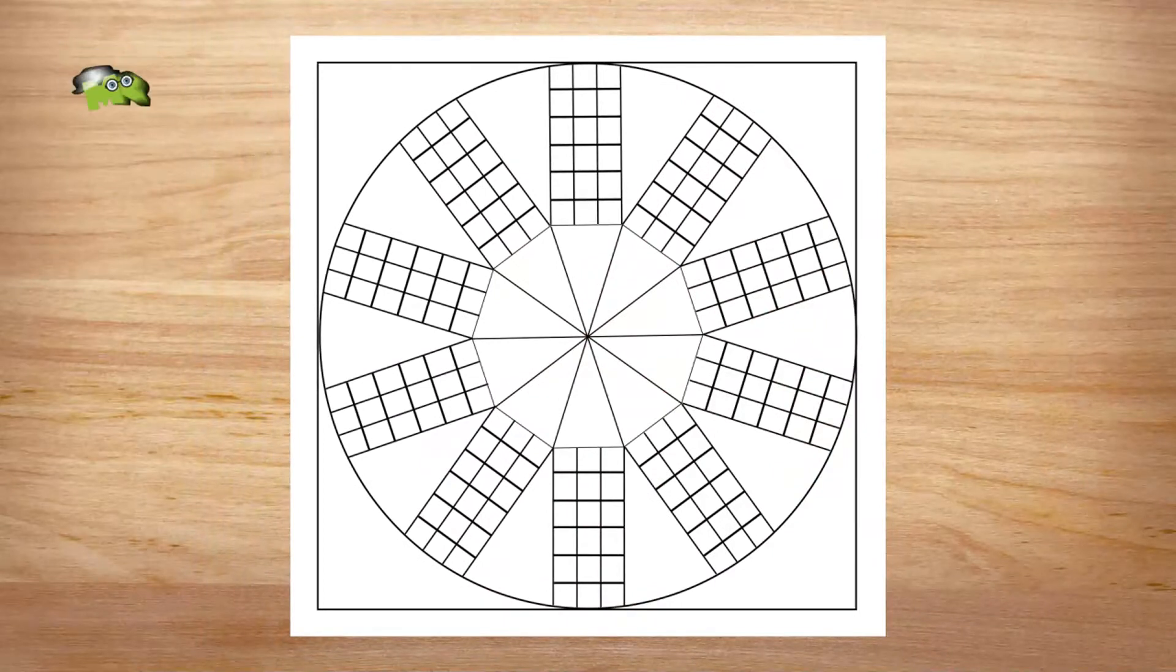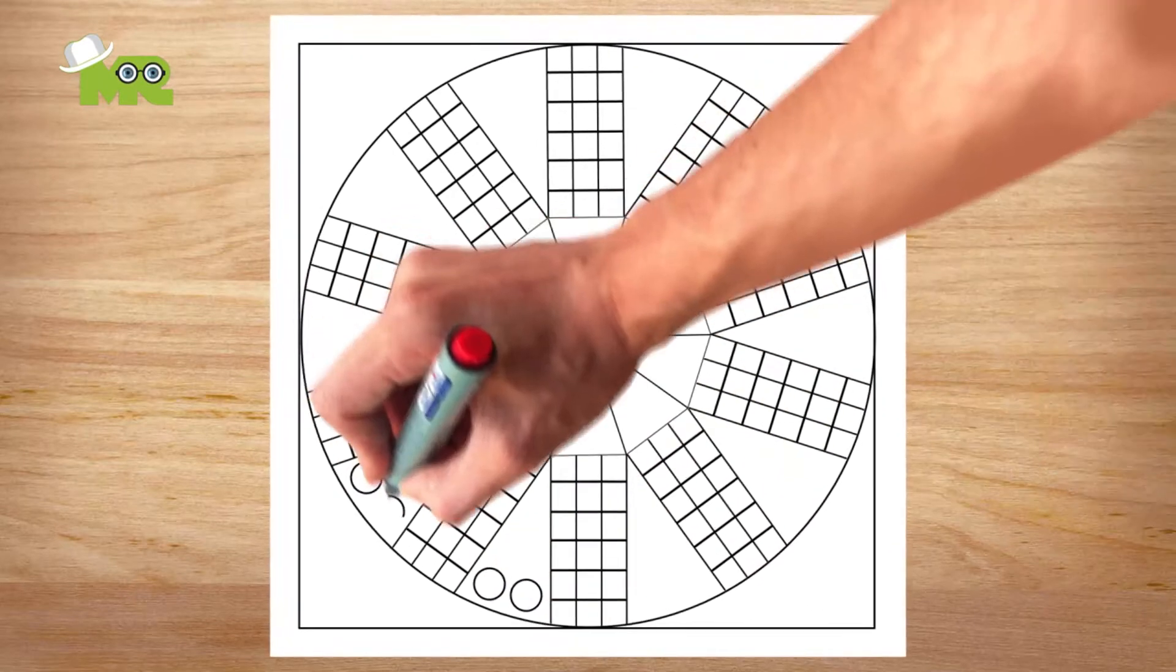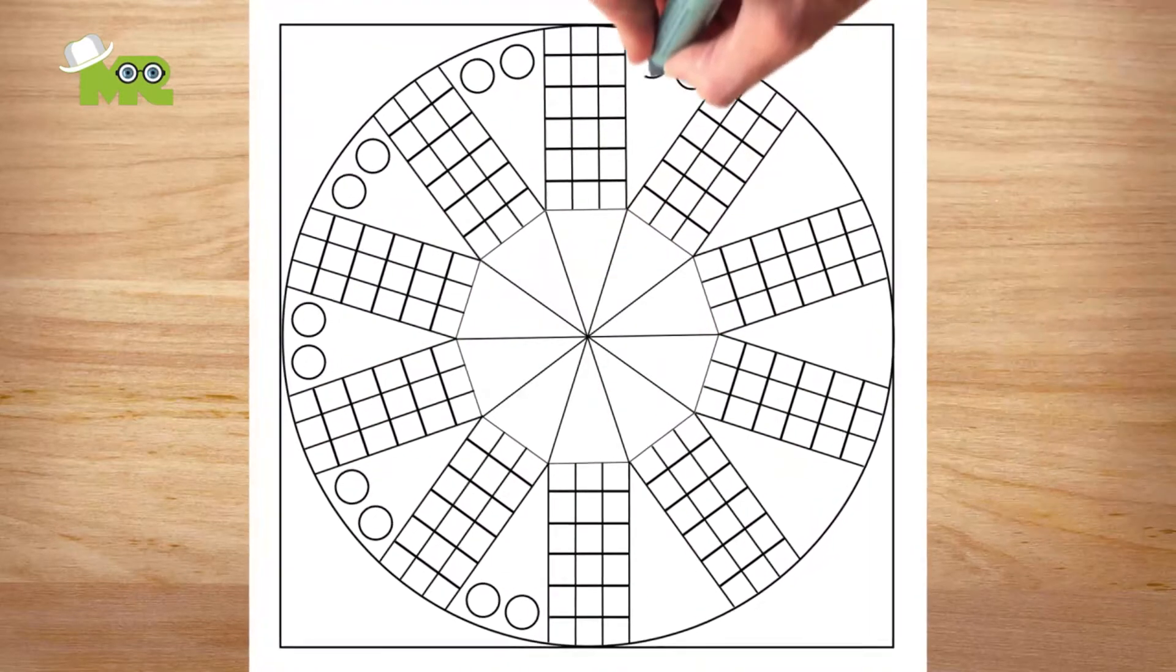When you're all done, now we have a board with a total of 180 small squares. Now let's draw all 10 bases on the board.